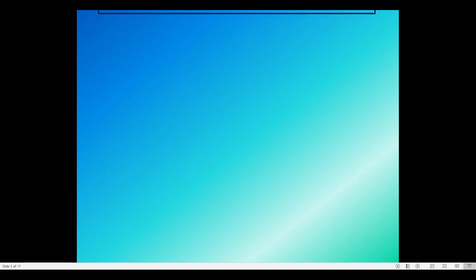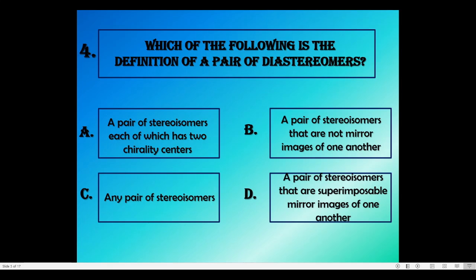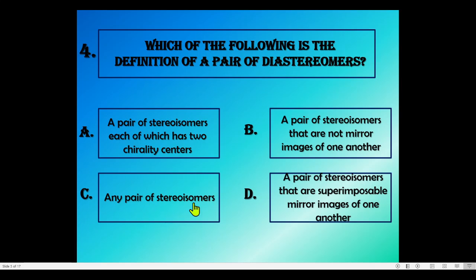Fourth question: which of the following is the definition of a pair of diastereomers? I recommend that those watching this video refer to the diastereomers video where there are many examples and definitions, including how diastereomers differ from enantiomers. Option A: a pair of stereoisomers which has two chirality centers. Option B: a pair of stereoisomers that are not mirror images of one another.